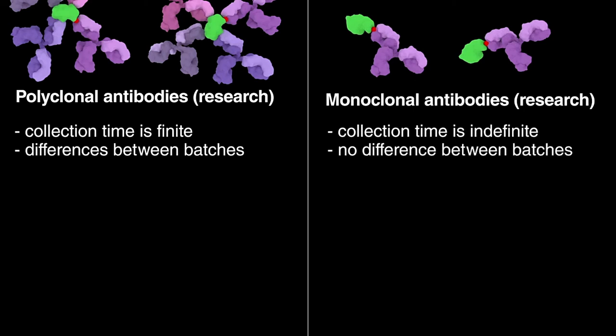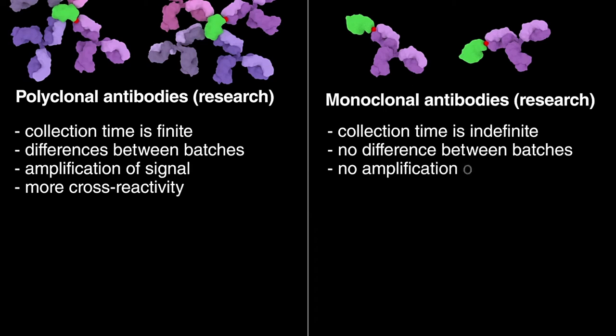Since polyclonals can recognize multiple sites within a protein, they can amplify detection signals, but they also cross-react more with non-specific proteins. Monoclonals, on the other hand, do not amplify detection signals as well, but provide a lower signal-to-noise ratio due to their higher specificity.